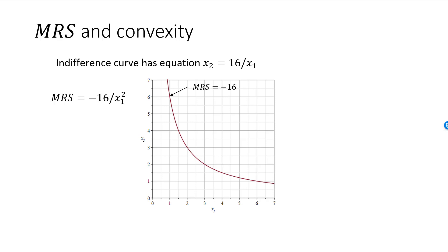For x1 equal to 1, MRS equals minus 16. When x1 equals 2, MRS is minus 4. When x1 equals 4, MRS is minus 1. And when x1 equals 6, MRS is minus 16 divided by 36, or minus 4 over 9.